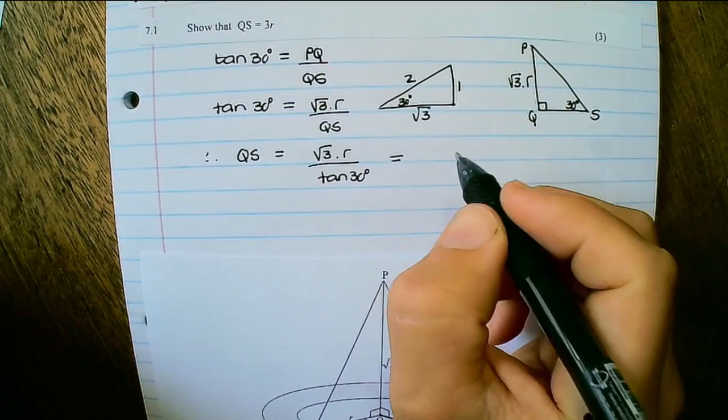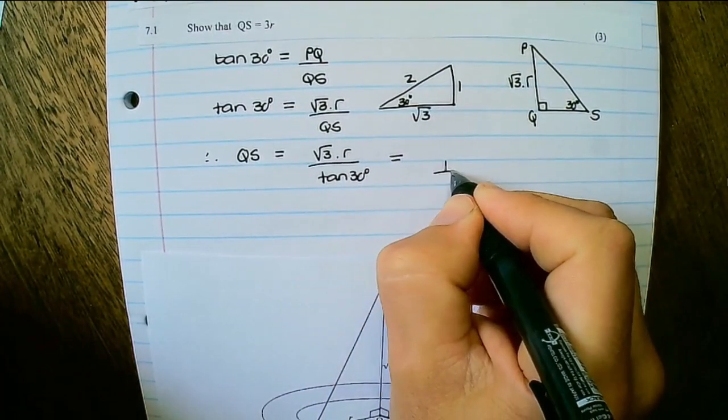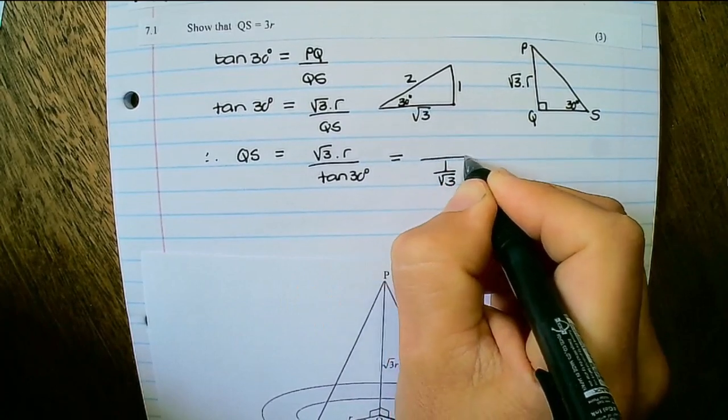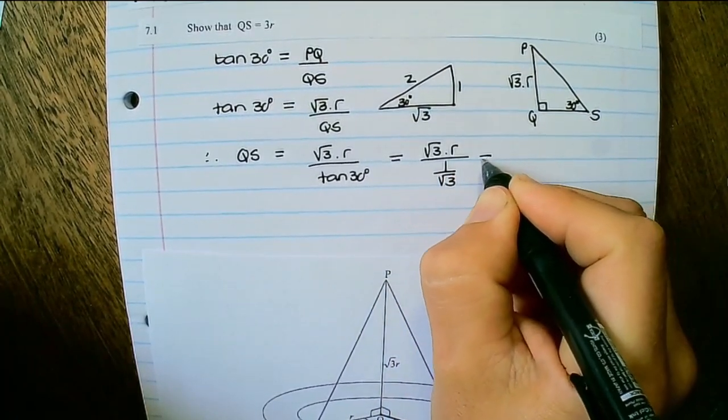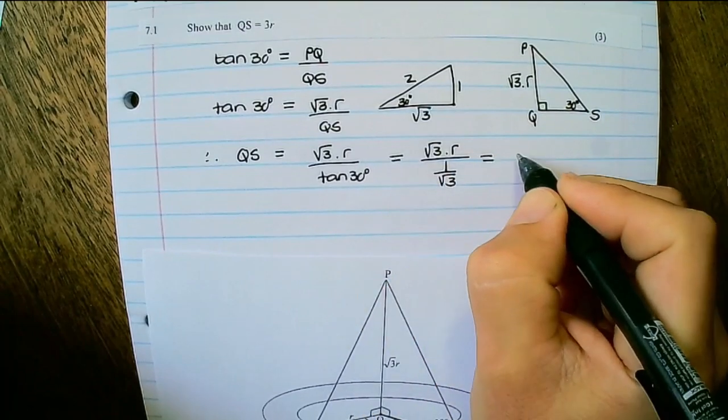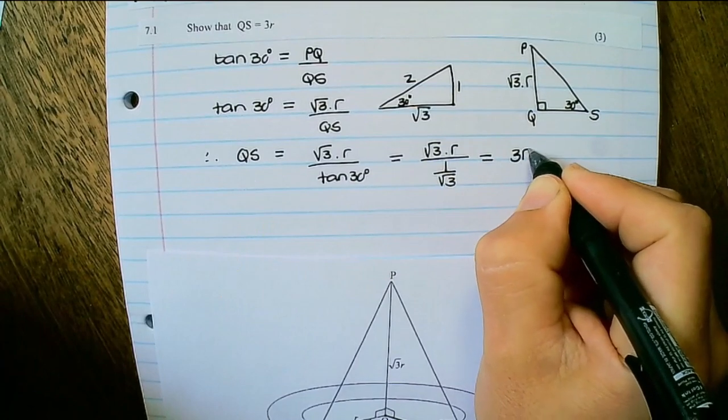And the tan of 30 degrees can be represented as 1 over square root of 3. So therefore, if I substitute and simplify, I have QS is equal to 3R.